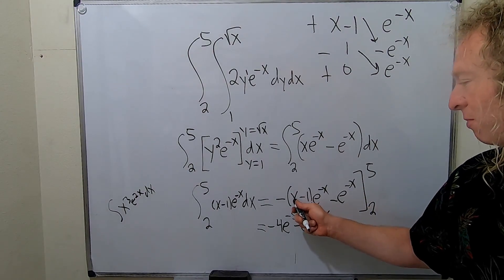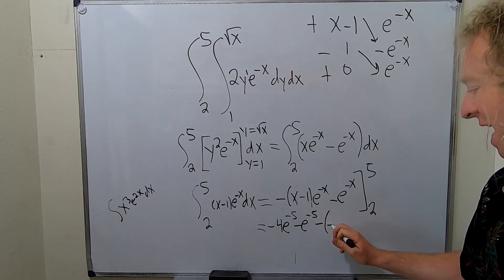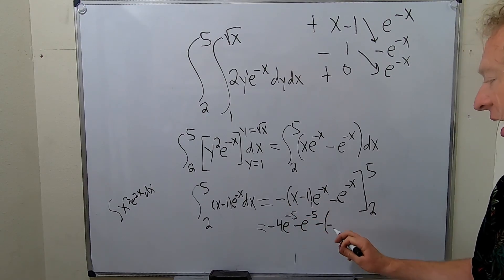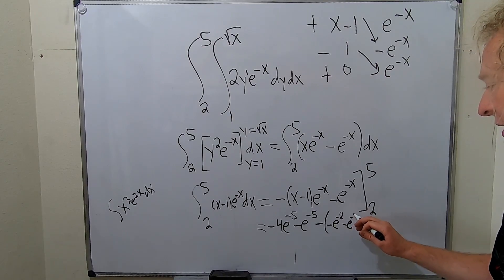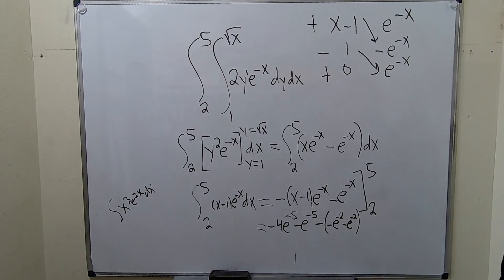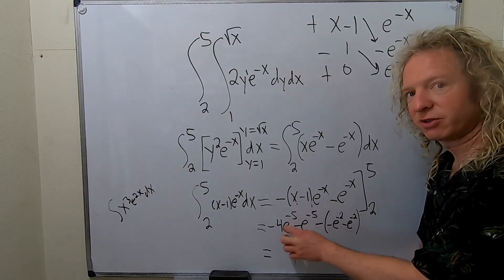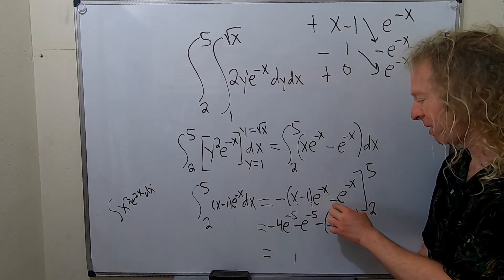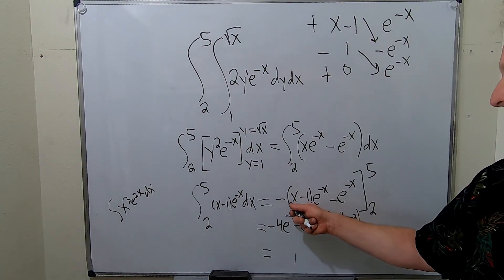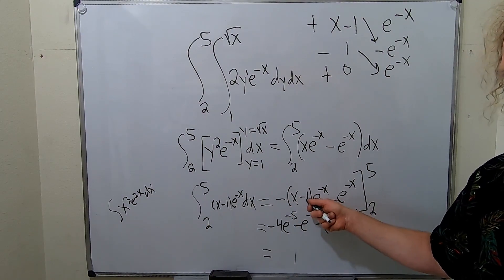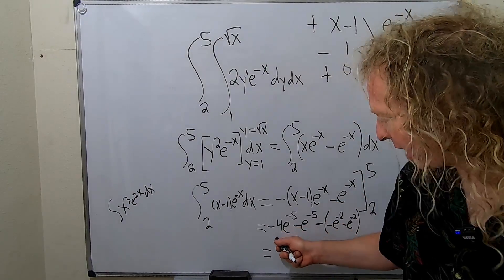To integrate this, you can use tabular on part of it, or you can factor out e to the negative x and use tabular on the whole thing. Let's pull out the e to the negative x and use tabular. So we have x minus 1, times e to the negative x, dx, and we'll use tabular on this piece.